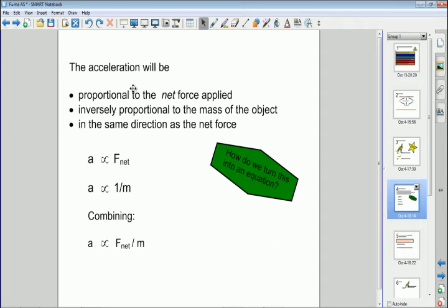Because the acceleration is going to be proportional to the net force. So if you apply double the force, you're going to double the acceleration. But it's also inversely proportional to the mass of the object. So if you double the mass with the same force, you're going to halve the rate of acceleration. It's going to go down by the same factor as the mass goes up. It's inversely proportional.